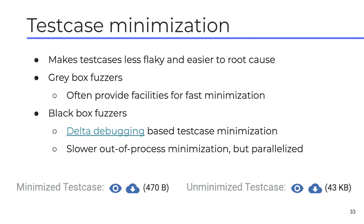Providing a minimized reproducer is also very important to get a developer to fix a bug. A very complicated reproducer will need more time to analyze, and it can also make reproduction more flaky — unnecessary parts of a reproducer could prevent the actual bug from being triggered. Fuzzer-generated test cases can be hundreds of kilobytes if not megabytes long, but most of the time you can minimize them by several orders of magnitude — for example, a 43 kilobyte test case minimized down to 470 bytes. LibFuzzer and AFL have this functionality built in. For black box fuzzers, we built our own black box minimization, which handles more complicated test cases like HTML with dependencies, gestures, and command line argument dependencies.